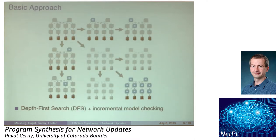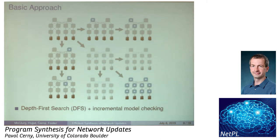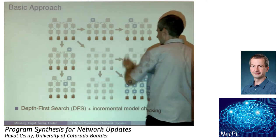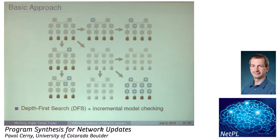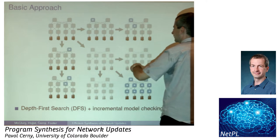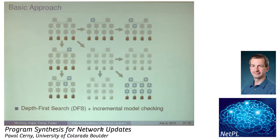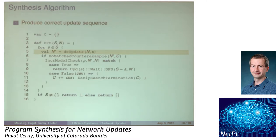The basic algorithmic approach is a depth-first search where we try to update switches one by one, trying all possible orders, with many optimizations to improve both the synthesis process and the quality of the synthesized solution. We start with all switches non-updated and proceed to all being updated. Since we pass through similar configurations, we do incremental verification — checking just the delta between configurations. We use counterexamples to prune the search space, and additional optimizations to remove the waits between updates.